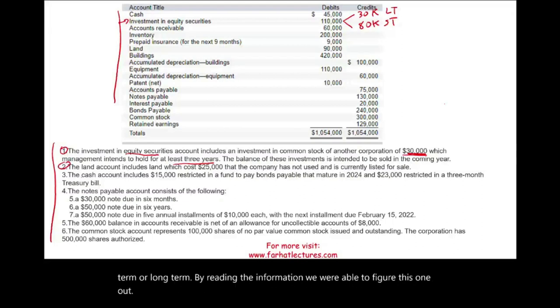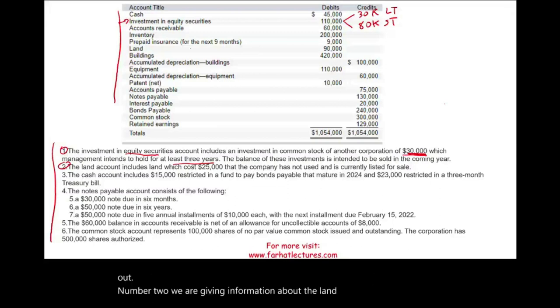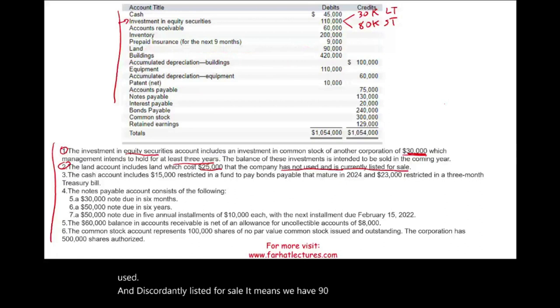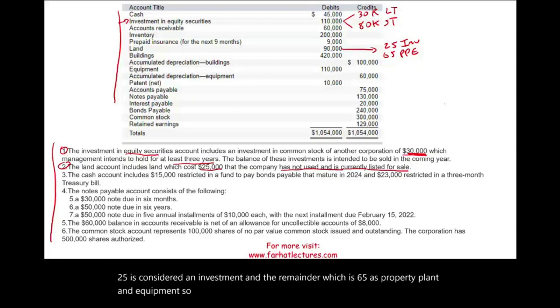Number two, we are giving information about the land account. And here's the land account. We have $90,000 in the land account. It says the land account includes land which costs $25,000 that the company has not used and is currently listed for sale. It means we have $90,000 worth of land. Of this amount, $25,000 is considered an investment and the remainder, which is $65,000, is property, plant, and equipment. So $90,000 is the total. We are told the $25,000, it's not used, it's held for sale. Once it's held for sale, the land becomes an investment. Therefore, $25,000 will be listed under the investment and $65,000 will be part of property, plant, and equipment.